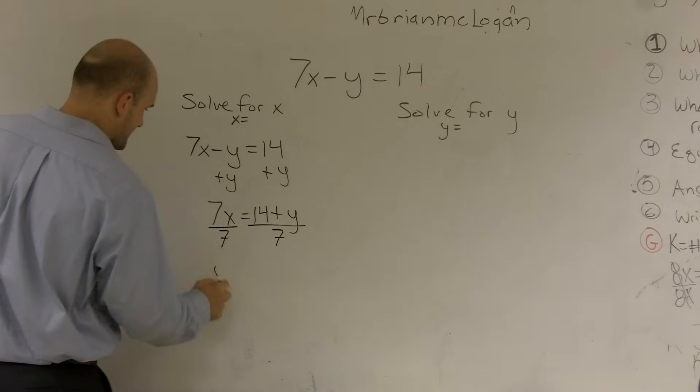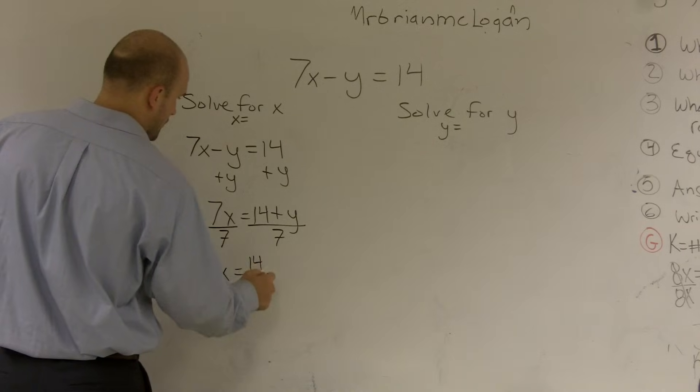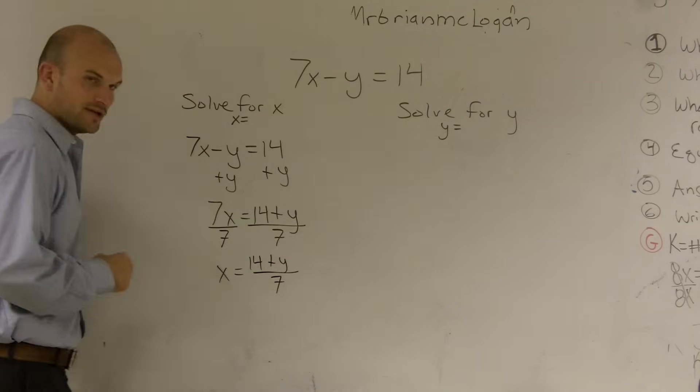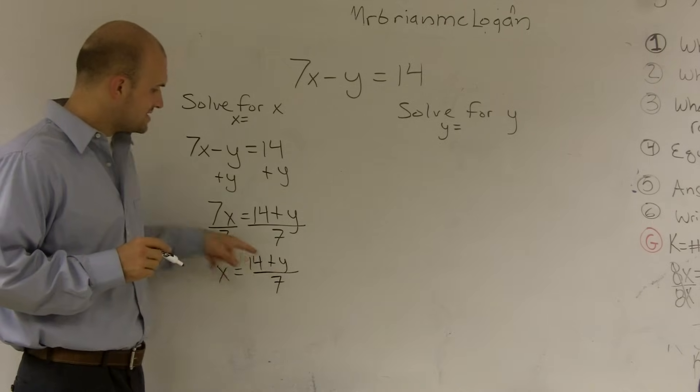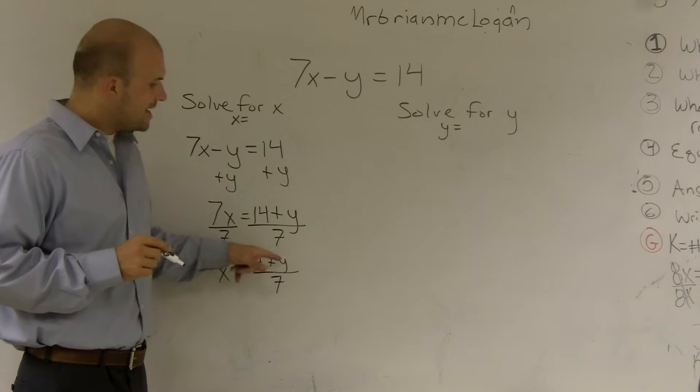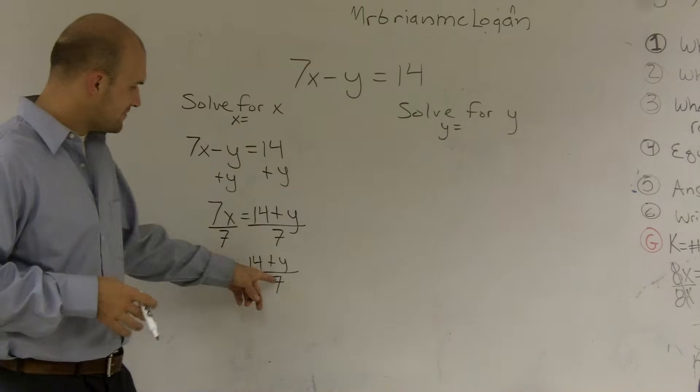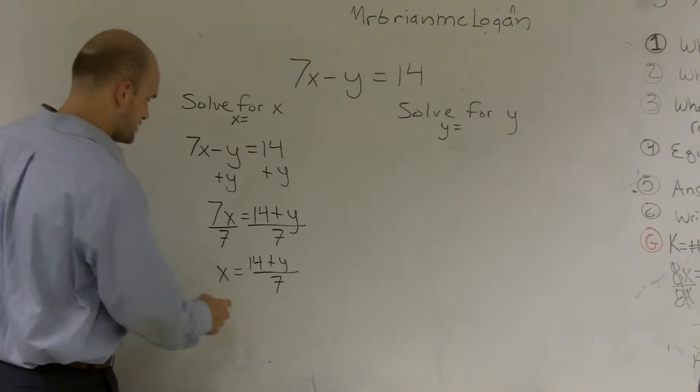So therefore, my final answer, well, not my final answer, but x is going to equal 14 plus y over 7. And what you can notice now is this means this 14 needs to be divided by 7, and this y needs to be divided by 7. So what we can do is I can divide a 14 in by 7. That's going to give me 2.